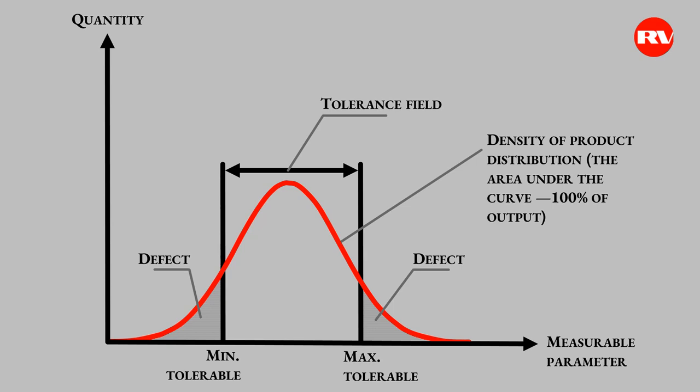Now let's recall an anecdote. A certain American company ordered some products from the Japanese. When the first shipment arrived, the Americans opened the box and found a letter there. The letter said: 'Although we don't understand the customer's wish that the number of defects should not exceed 2%, nonetheless, meeting the customer's wishes we produced 2% of defective products. All products are packed in containers with the capacity of 100 units. To distinguish defective products from conditioned products, the defective products are wrapped in red wrapping paper.'